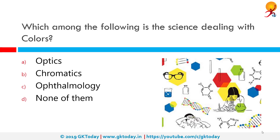Which among the following is the science dealing with colors? The correct answer is chromatics. Chromatics is the science of colors. However, optics is also a near suitable option as it deals with the visible, ultraviolet, and infrared regions of light.